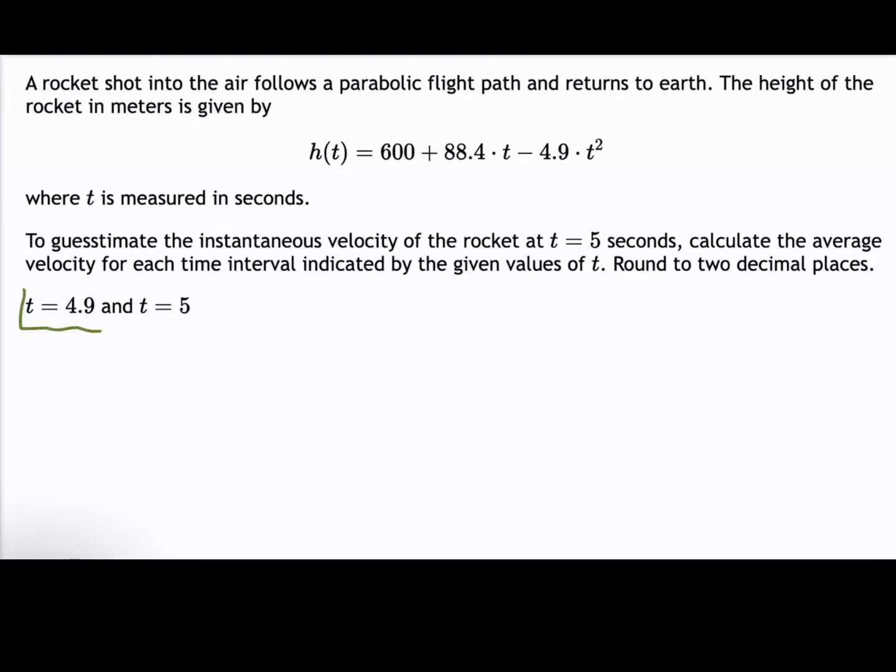In this example, we're only going to work with one time interval from t = 4.9 seconds to t = 5 seconds. Also, you might recall that average velocity is just the slope of the secant line over the time interval. So we need to calculate a point from the left boundary of the time interval and calculate a second point from the right boundary of the time interval so that we can find the slope of the secant line.